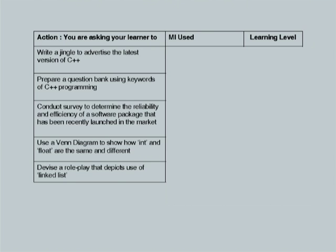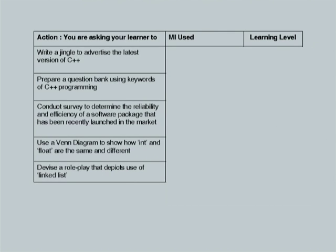You can see that the intensity of the learning level about C programming is increasing, and simultaneously I am involving learners to build confidence in verbal intelligence. I have shown you both processes — how to exploit the learner's intelligence and involve them, and how to imbibe these intelligences while taking them through different levels to make them critical thinkers. Now another round of quiz: I will give you a set of actions — for the first one, 'Write a jingle to advertise the latest version of C++.' What intelligence am I tapping?